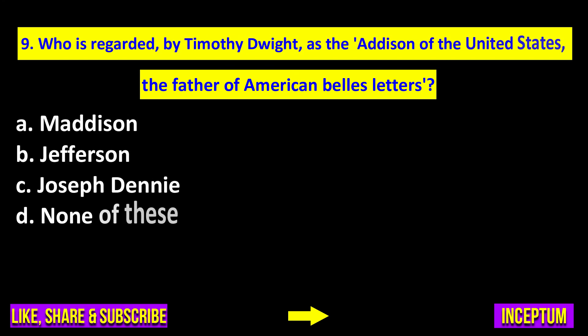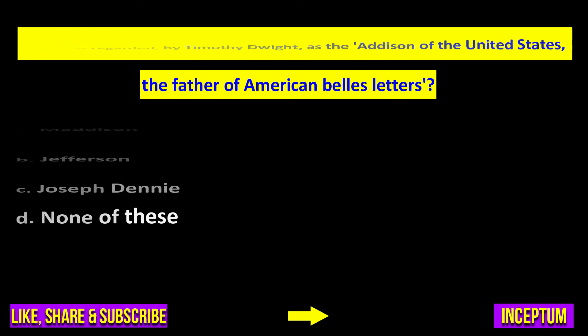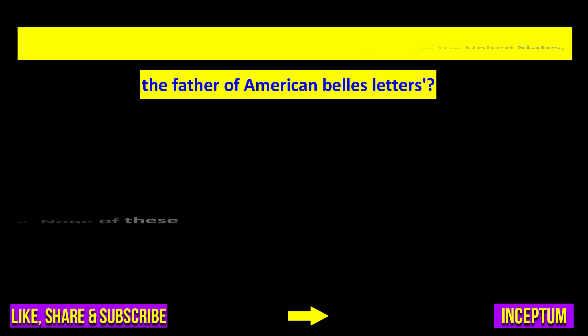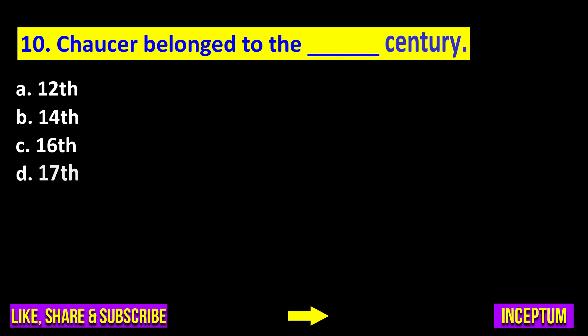Question number nine: Who is regarded by Timothy Dwight as the Edison of the United States, the father of American belles-lettres — Madison, Jefferson, Joseph Dennie, or none of these? The right answer is option C: Joseph Dennie.